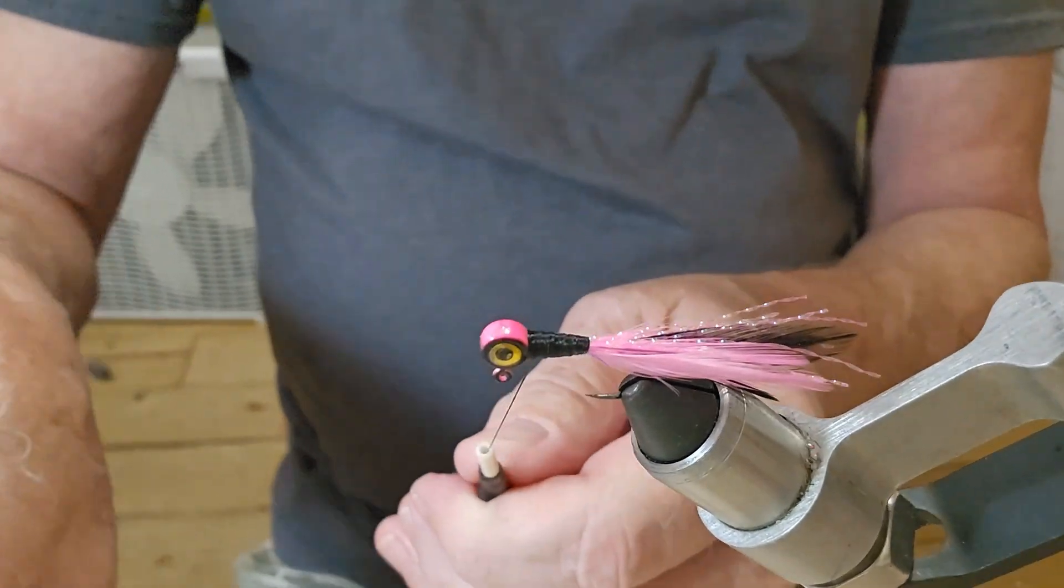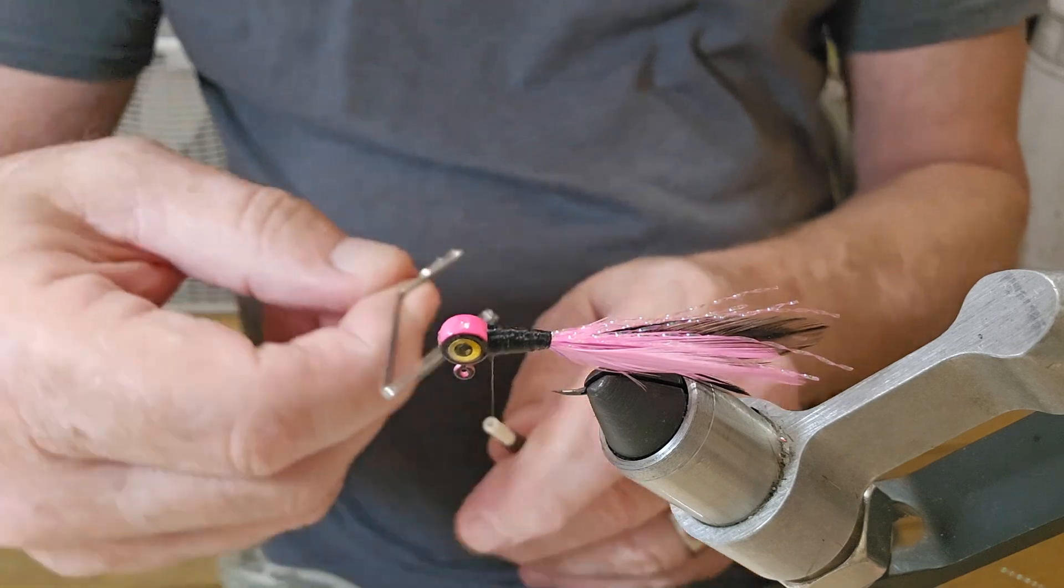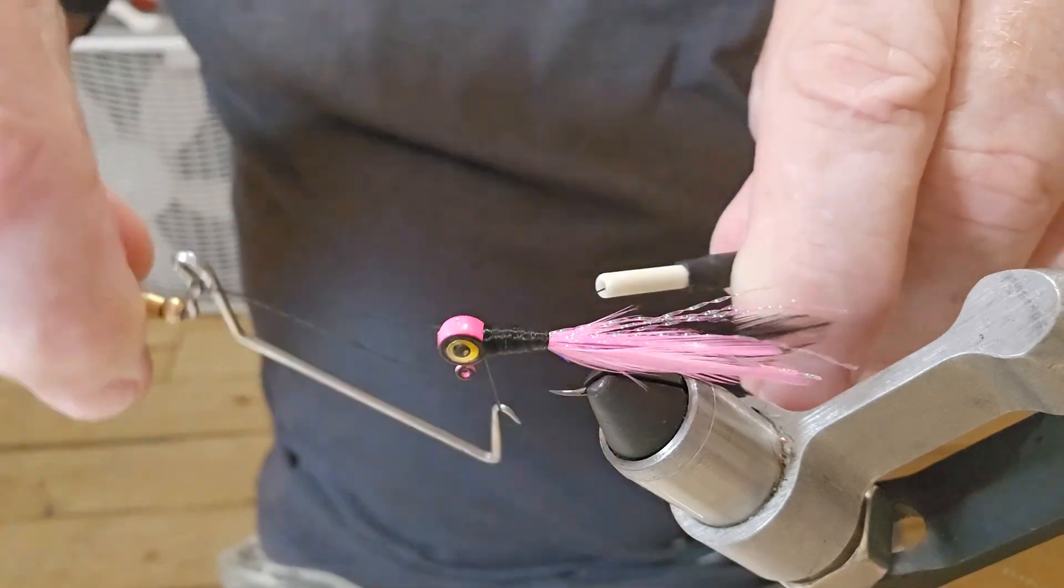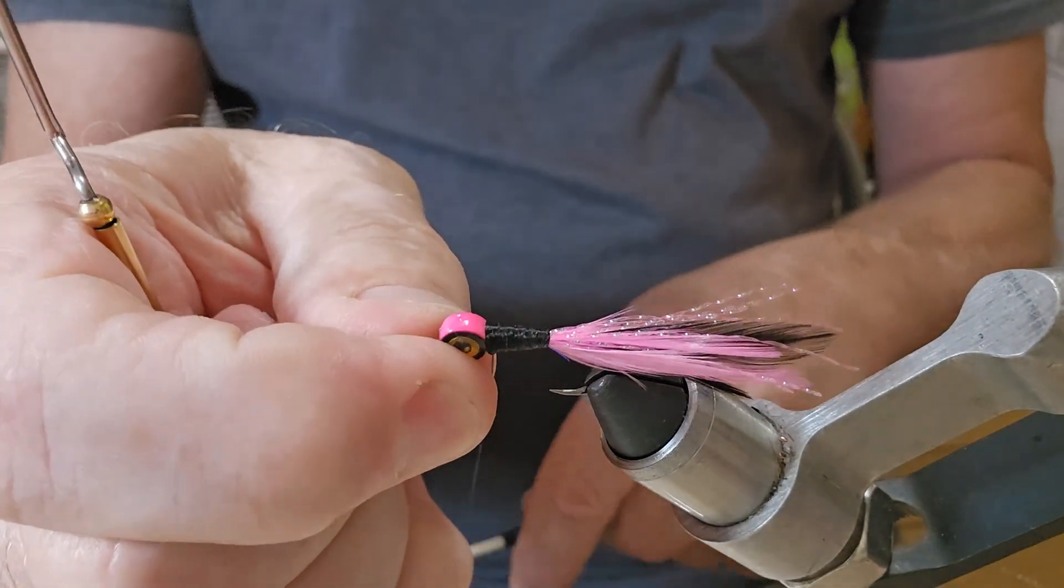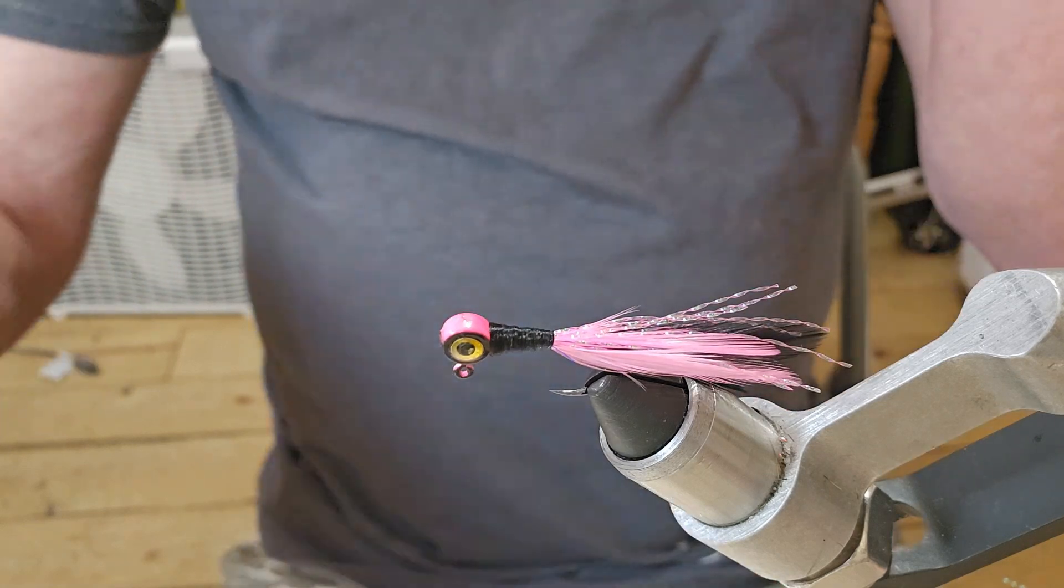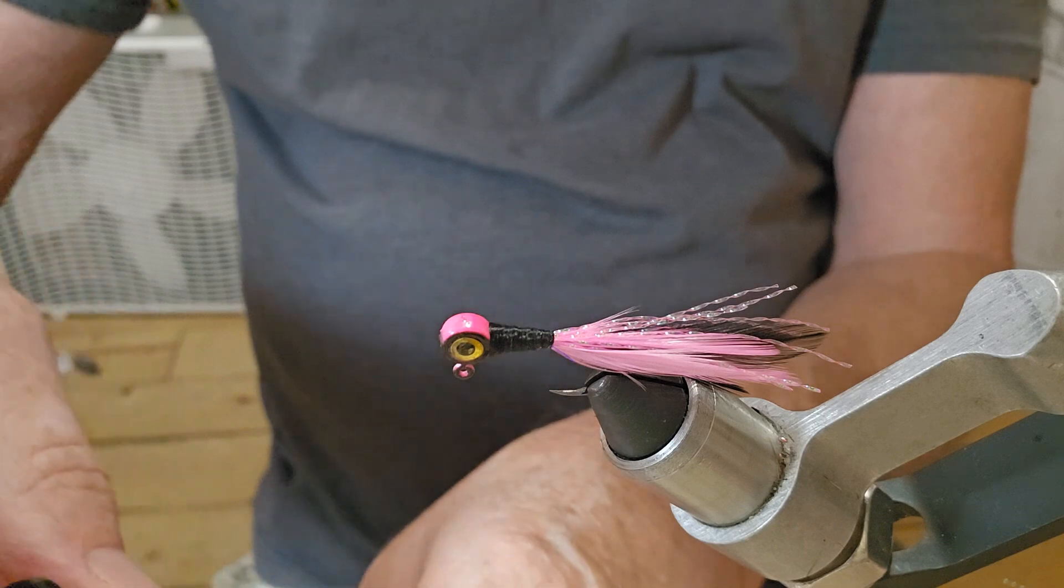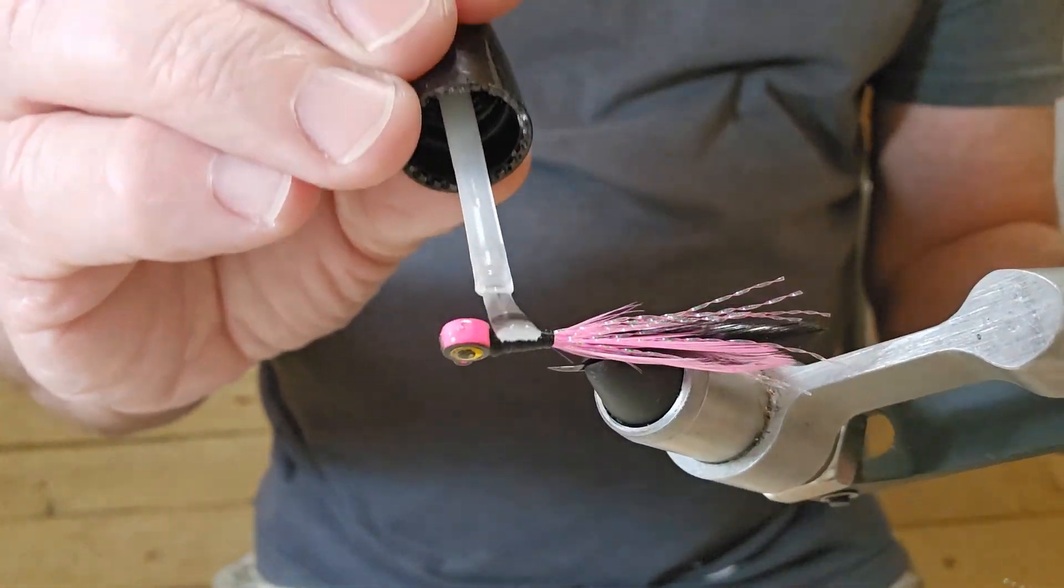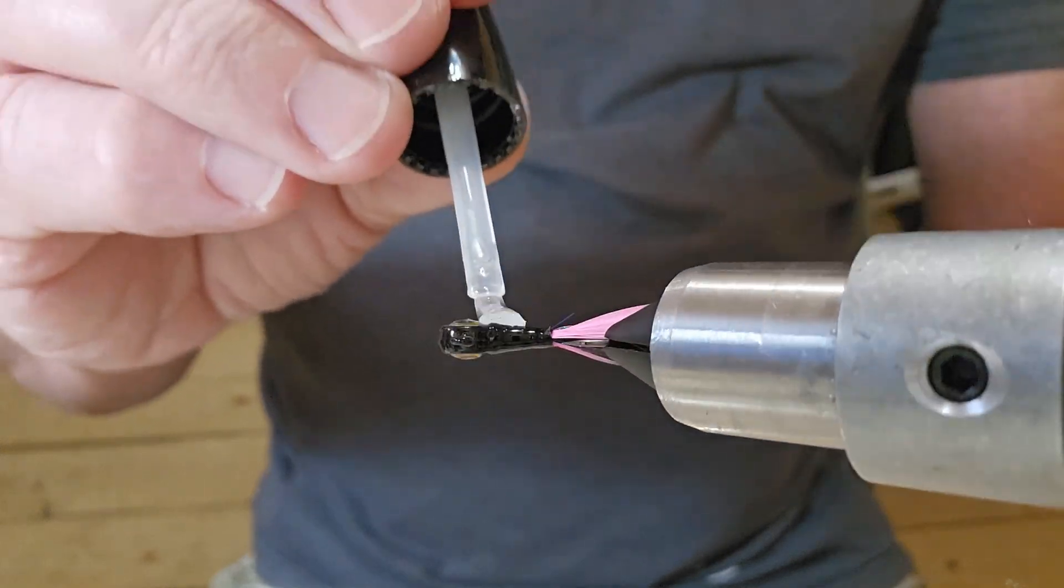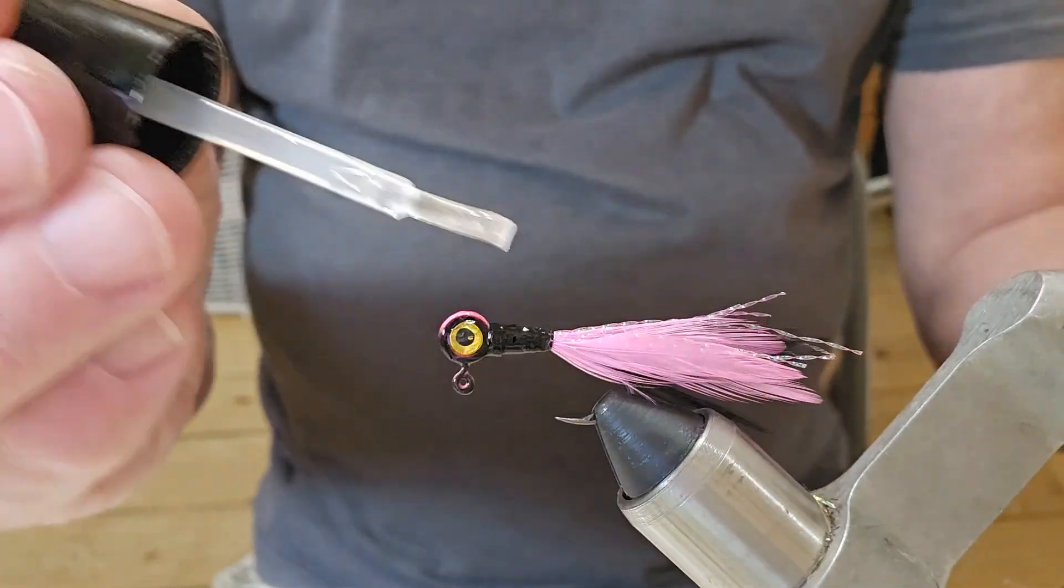That should be good. Got my whip finish tool sitting under my camera. We'll go ahead and do our five turn whip finish, pull it tight and get in here and cut our thread. Instead of UV resin, I'm just going to use Sally Hansen on this. Just give it a good coat of Sally Hansen, give a nice shine to it, help protect those threads, and it'll just go with the jig head too. Why not.